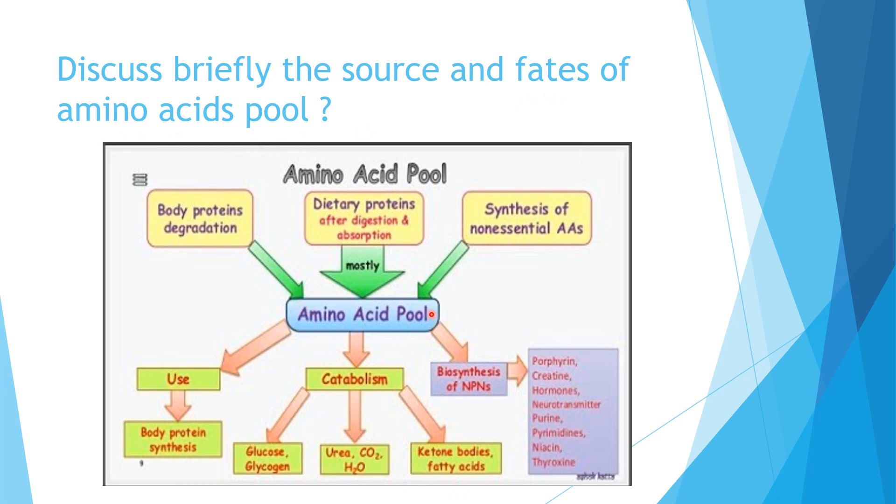The amino acid pool has three different sources. The major source is dietary proteins. Dietary proteins are the proteins that we consume in our diet. When digestion of dietary proteins occurs, free amino acids are absorbed into the blood. This is the major source of amino acid pool.